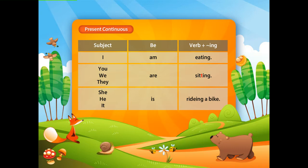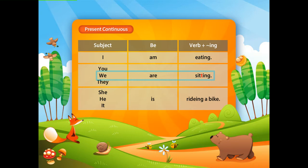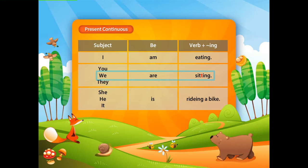However, like in the example 'we are sitting,' when the last two letters of the verb are a vowel and a consonant, you repeat the last consonant and then add ing.